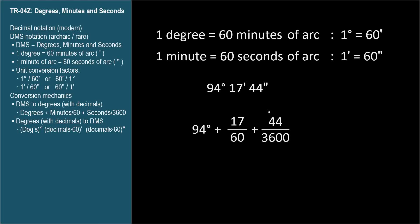Then we add the number of seconds, 44, divided by 3600, since there are 3600 seconds in a degree. Here's the result.